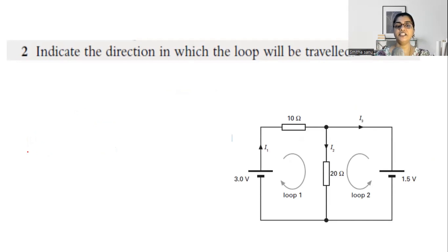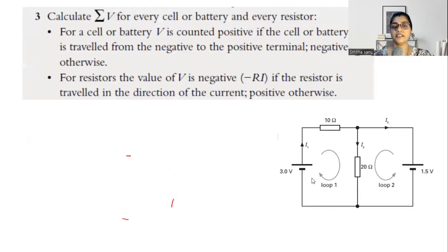Next, indicate the direction in which the loop has to be traveled — it's your choice. I have decided to move loop 1 in the clockwise direction and loop 2 in the anticlockwise direction. Decide the direction in which you would like to traverse each loop. Next is the law of conservation of energy: energy in equals energy out, so the summation equals zero.